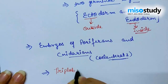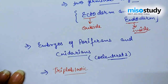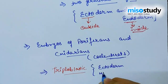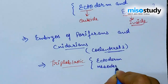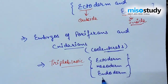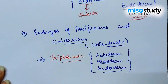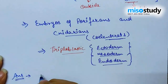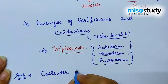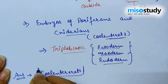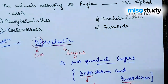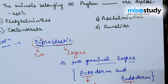In triploblastic organisms, there is a presence of three layers: ectoderm, mesoderm, and endoderm. But the question is asking about diploblastic only, which is present in Coelenterata, also known as Cnidarians. So the right answer for question one is option C — Coelenterata. Let's move on to the next question.